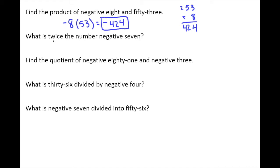Next one says what is twice the number negative 7? The word twice, if you take twice something, really just means two times. Also the word double means two times. So we would write this as just 2 times negative 7. We have a positive times a negative so that will give me a negative result, and 2 times 7 we should just have memorized as negative 14.